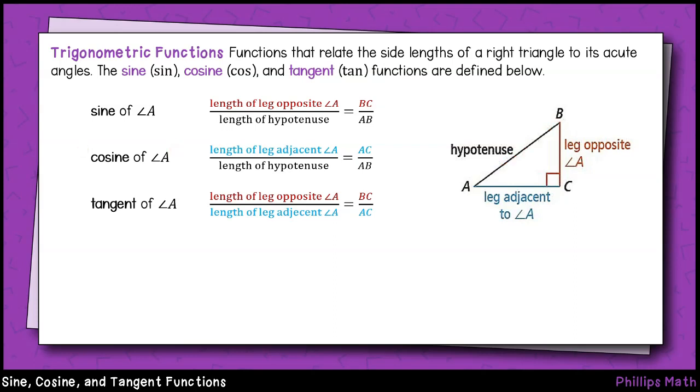The cosine of angle A is the ratio between the leg adjacent to angle A and the hypotenuse, which is across from the right angle. In this triangle, that will be the measure of line segment AC divided by line segment AB.